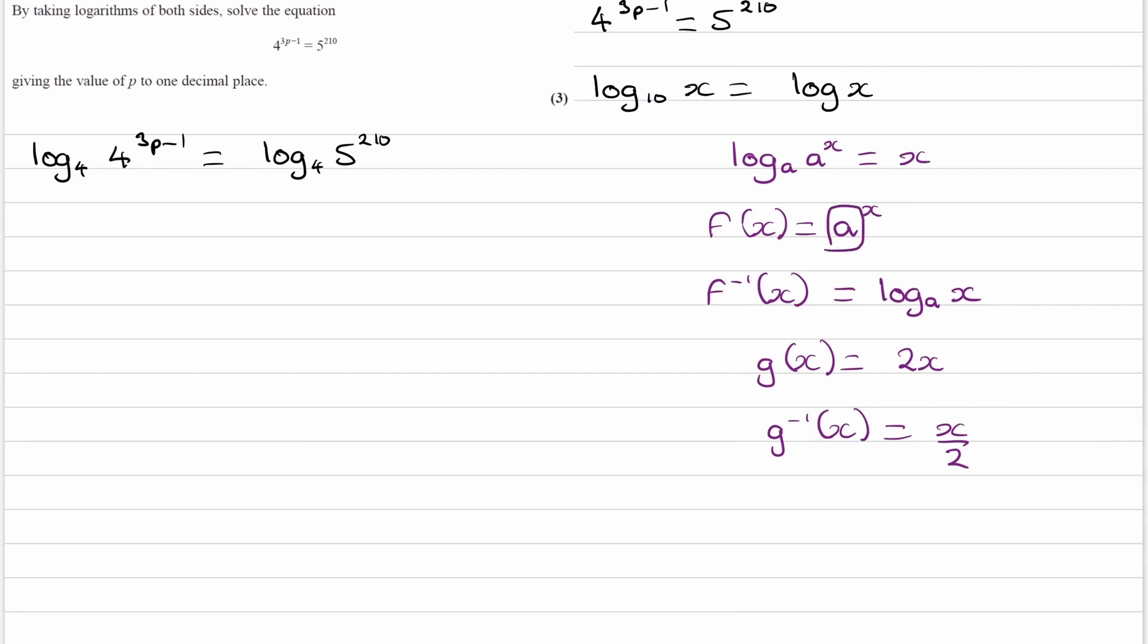And that's the same thing with how logs work. So a to the power of x, the inverse of that is log to the base a. So that's why log to the base 4 of 4 to the power of 3p minus 1 will then just give you 3p minus 1 on the left. That's just using this rule here.